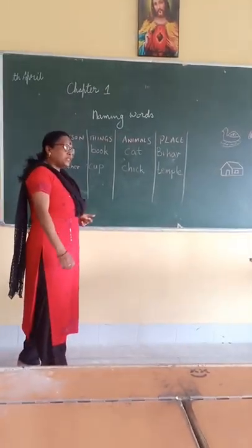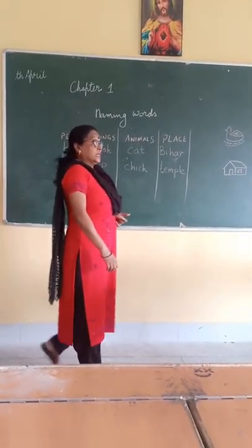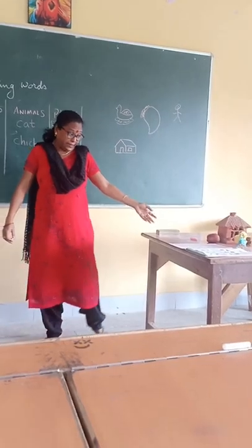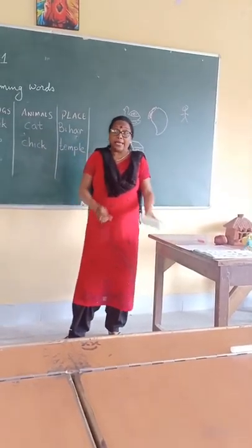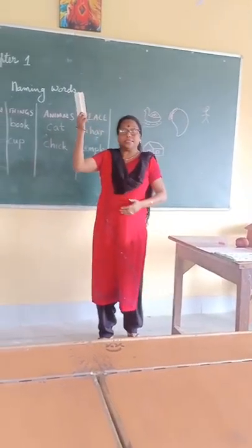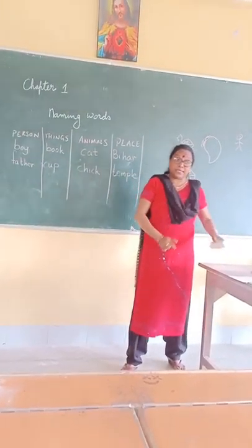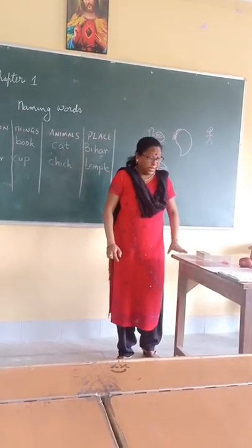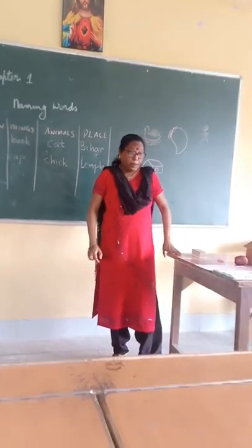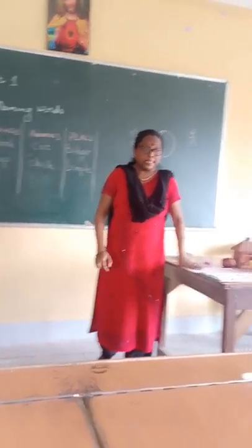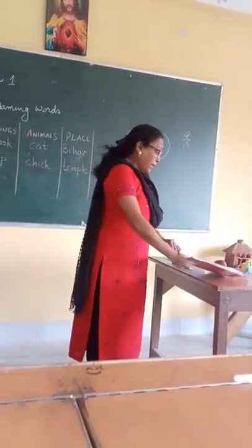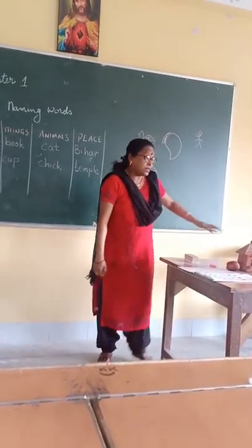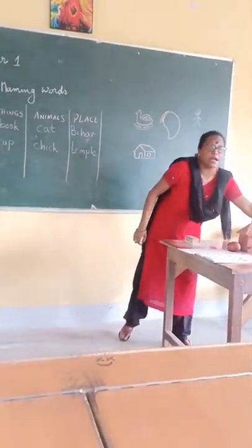Names of things — table. Can you see the table? And what is this? Duster — duster is also a thing. Book is a thing.